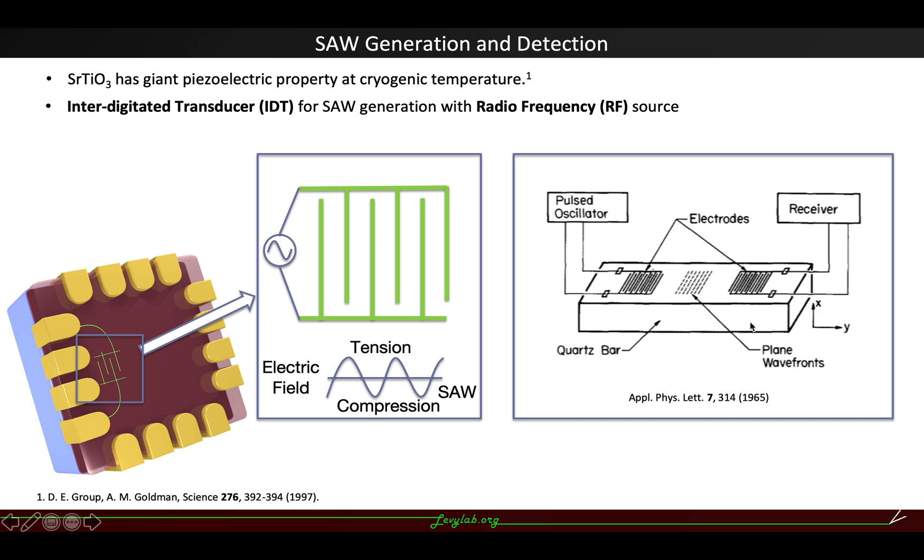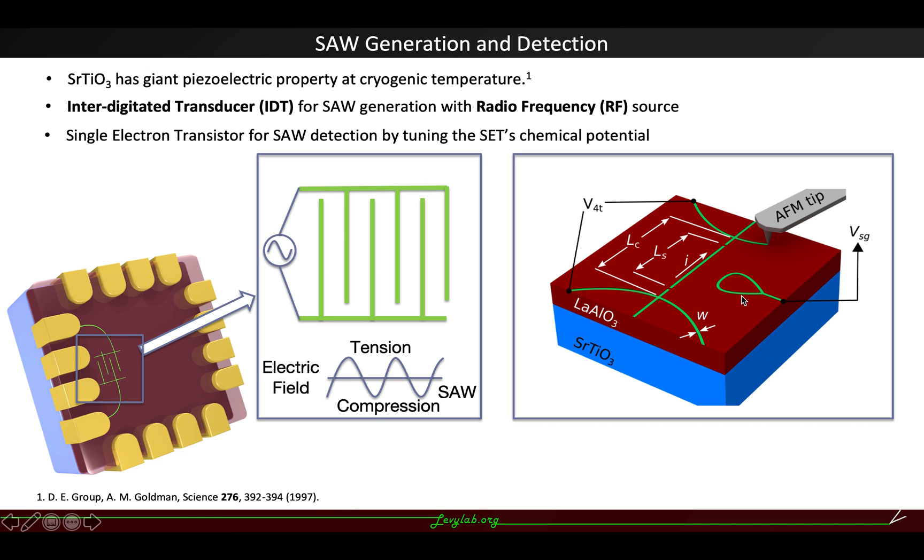Usually, the detection of surface acoustic wave is by this second interdigitated transducer device. But in our device, we want to couple it with a single electron transistor by tuning the single electron transistor's chemical potential using the surface acoustic wave.